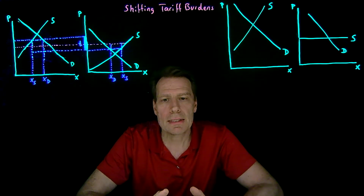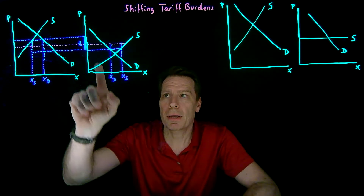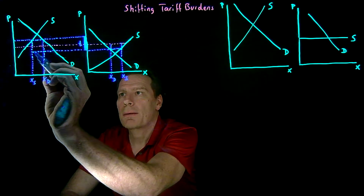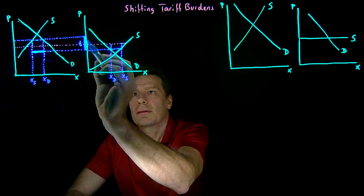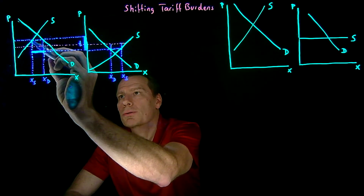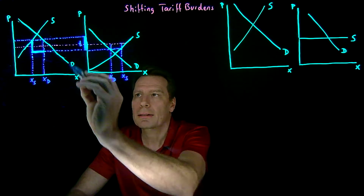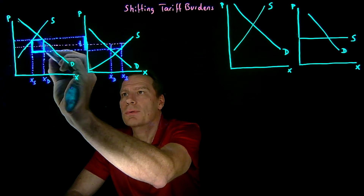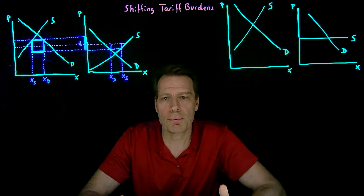We can see the tax revenue that's collected in this country by multiplying the per-unit tax times how much is being imported. This vertical distance is the per-unit tax being collected, and when we multiply the vertical times the horizontal distance, we get this box as the total revenue being collected in the importing country.